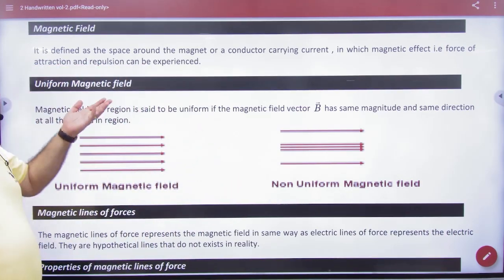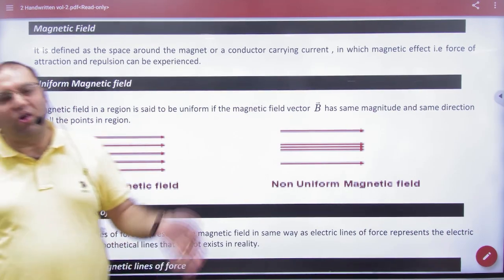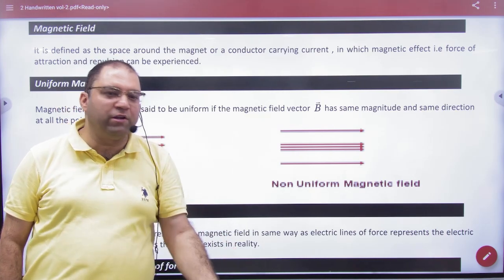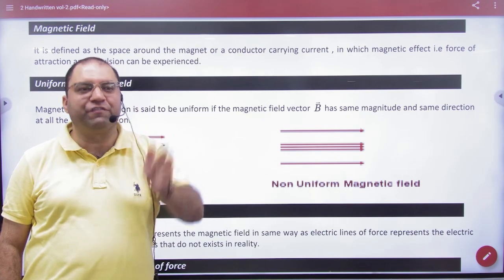It is defined as a space around a magnet where there is another magnet in which the force of attraction and repulsion can be experienced. The same feeling as the electric field is defined.